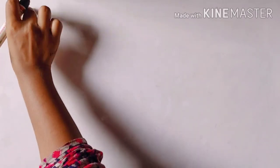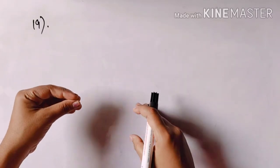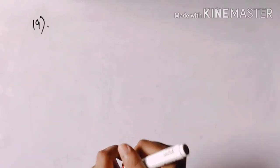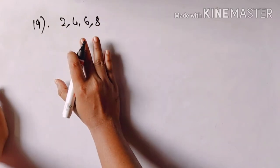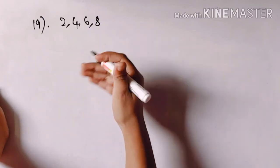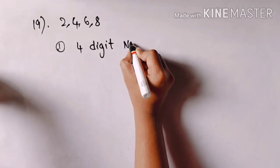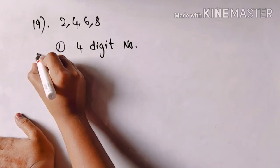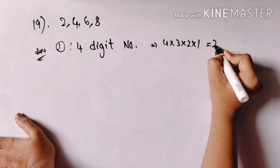Next, the 19th question — this is a sum of digits question. The digits are 2, 4, 6, 8, without repetition. First step: it is a 4-digit number. The number of 4-digit numbers is 4 into 3 into 2 into 1, which is 24.